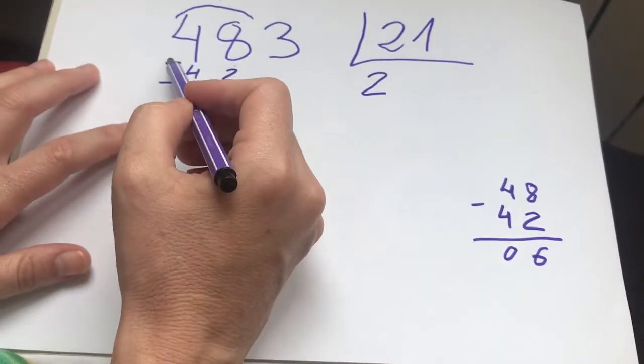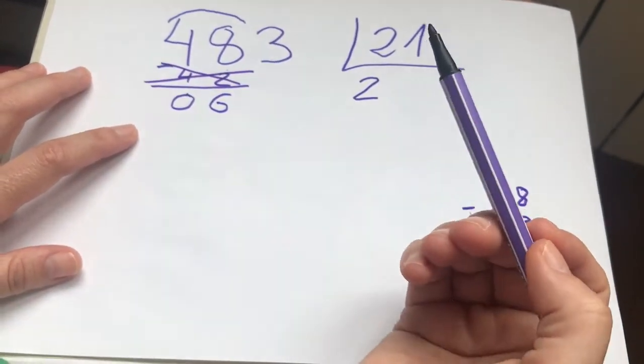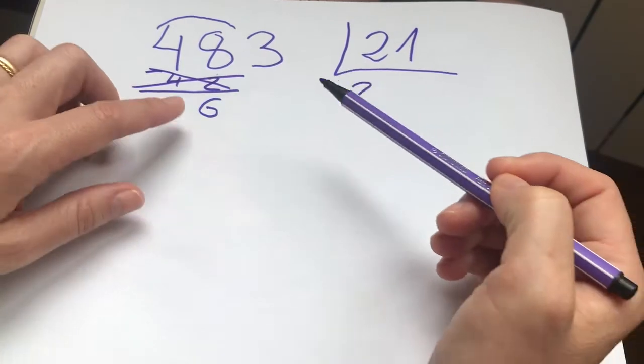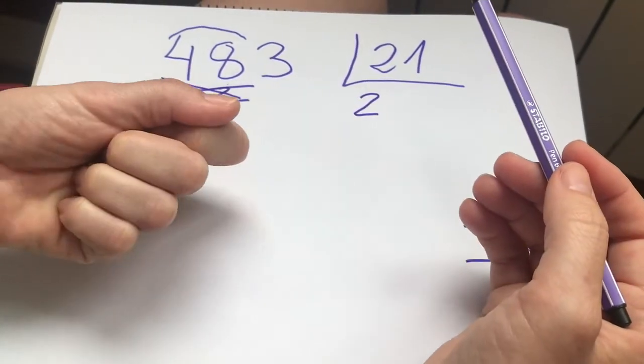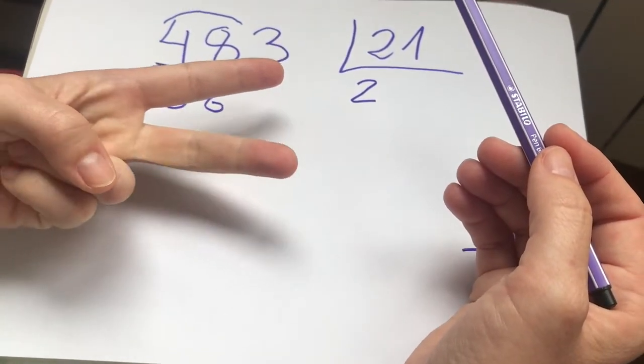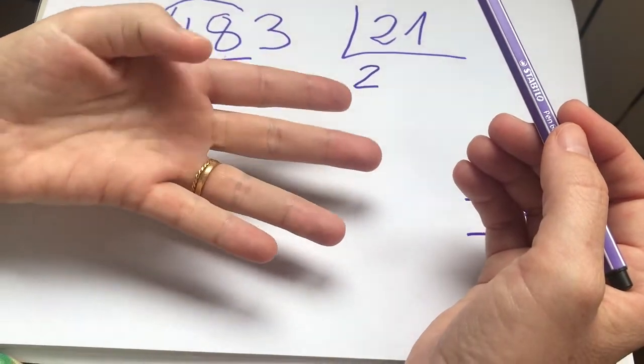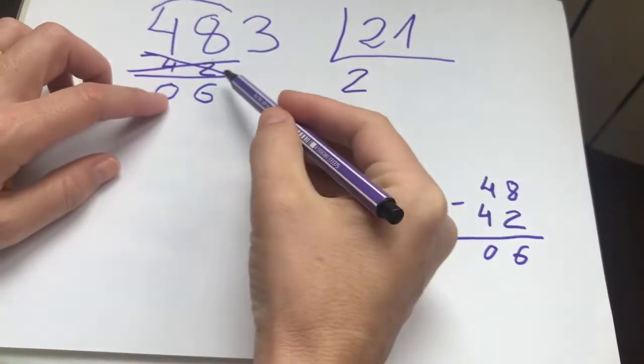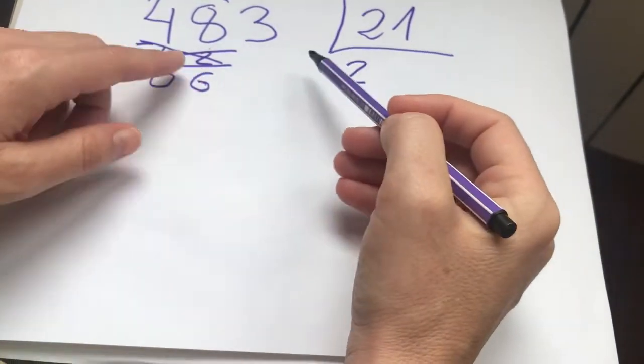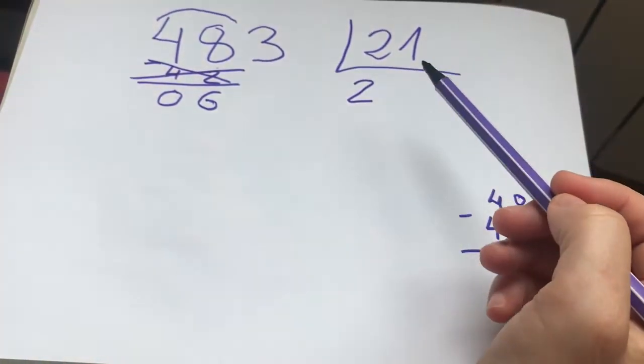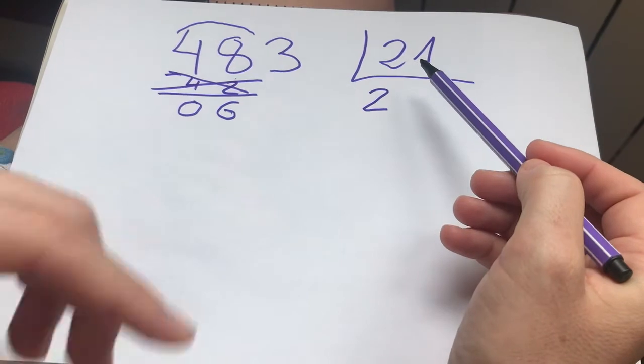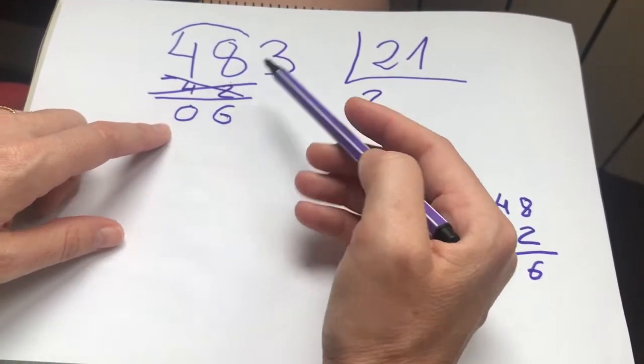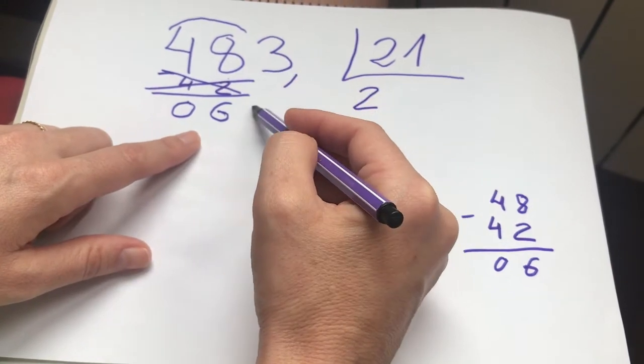Y la otra forma es la que estamos haciendo ya con una división, que es 2 por 1, 2. Y tengo que ir hasta el 8. Pues cuento con los dedos. 3, 4, 5, 6, 7 y 8. Son 6. Pues lo pongo. 2 por 1, 2. Al 8, 6. No me llevo ninguna. Entonces ahora hago 2 por 2, 4. Hasta el 4 que tengo que ir, 0. Y bajo la cifra siguiente.